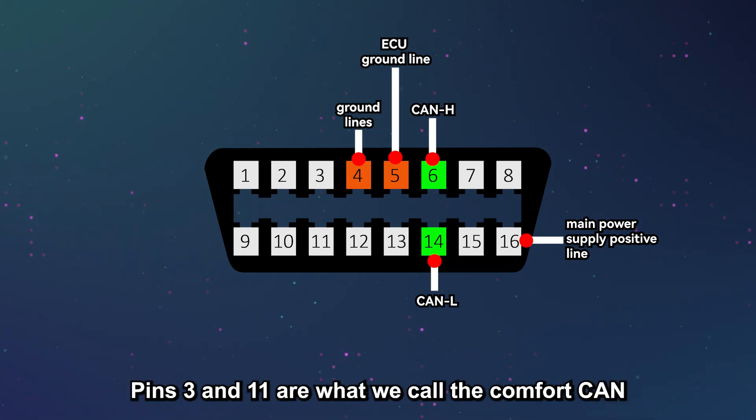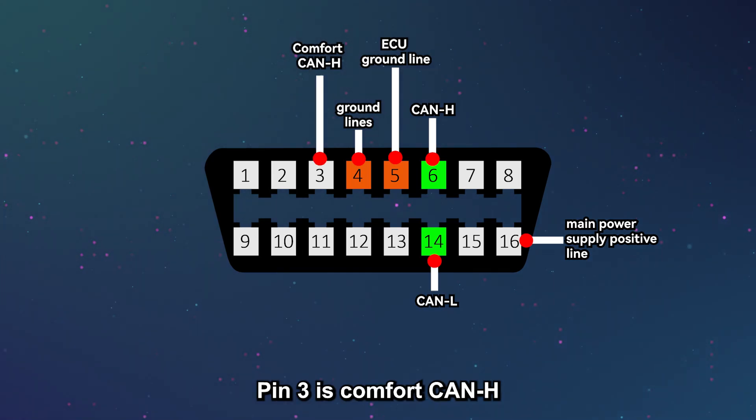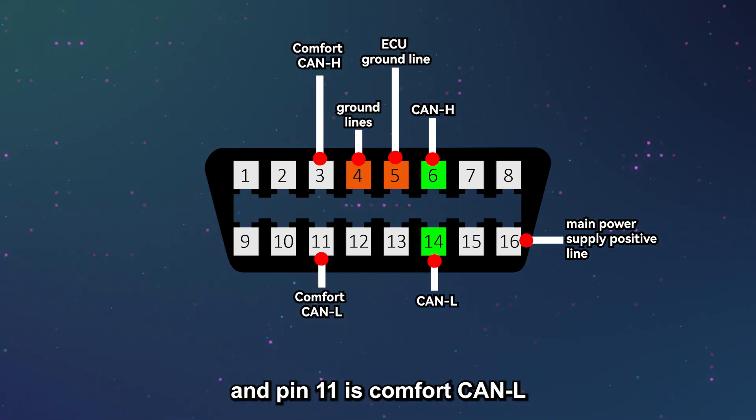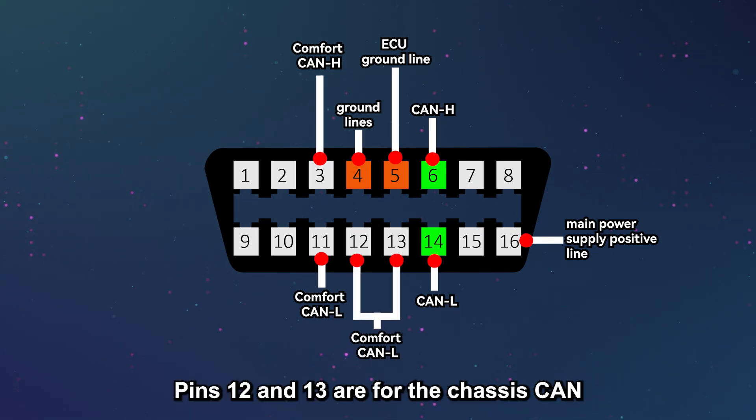Pins 3 and 11 are what we call the comfort CAN. Pin 3 is comfort CAN-H, and pin 11 is comfort CAN-L. Their combined voltages also 5 volts. Pins 12 and 13 are for the chassis CAN.